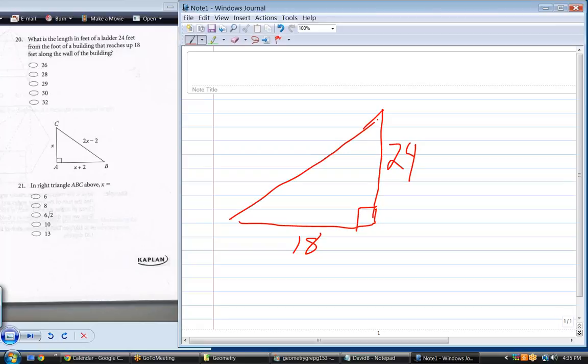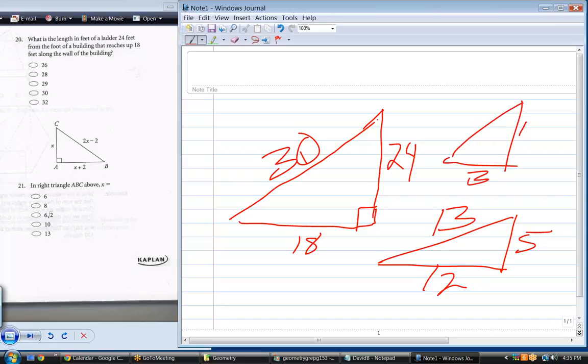Is this a 3-4-5 triangle? Yeah, it is. I can divide 6 into this 3 times, 6 into that 4 times. But what we're looking at is a 3-4-5 triangle that's a multiple of 6. So, what is this line? 30. That's the easy way to do it. Now, obviously you can only use that technique if you're looking at a 3-4-5 or a 5-12-13.